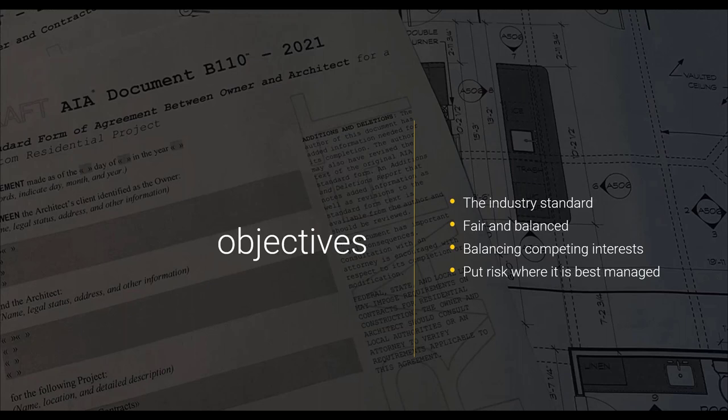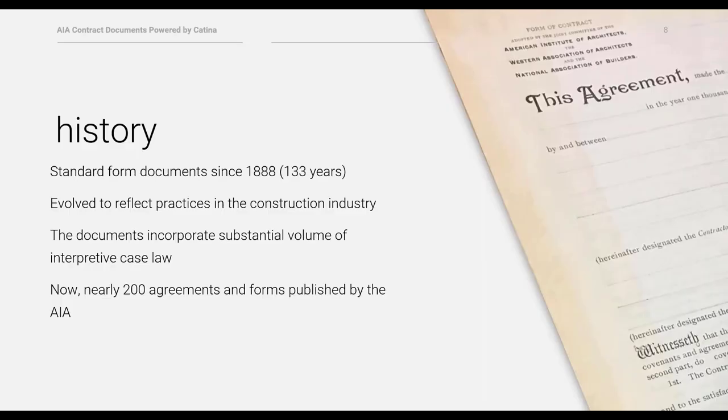As a committee made up of AIA members and industry experts, our goal is for the design and construction industry to treat the AIA contract documents as a standard. We gather continuous feedback from document users, learn from them, and continually modify the documents. The Documents Committee is supported by AIA committee members including architects, lawyers, and members of the construction industry — insurance companies, contractors, owners, and builders. We put a lot of effort into developing fair and balanced documents. If we favored architects only, nobody would use them. We have to balance the competing interests of those who sign these agreements and put risk on the party best able to financially manage that risk.